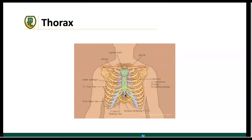You might know the xiphoid process if you are CPR certified — it is the area of the sternum we recommend not compressing on. It's spear-shaped, so when it punctures posteriorly, it will probably puncture a portion of the heart. Make sure you're performing chest compressions above the xiphoid process. These three bony structures make up the sternum, the most anterior portion of the thorax.